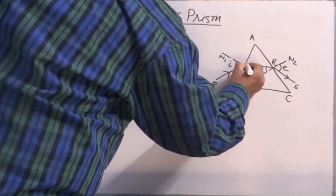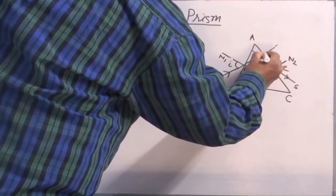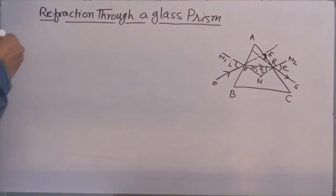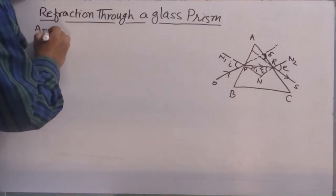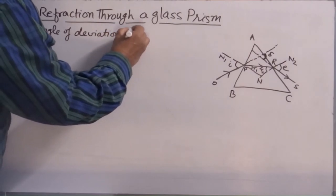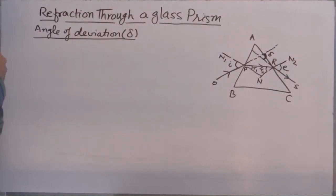If I extend this incident ray in forward direction and emergent ray in backward direction, wherever they intersect, this angle is termed as angle of deviation. So what is angle of deviation? First thing. Angle of deviation. It is an angle by which incident ray deviates from its actual path after passing through a glass prism.